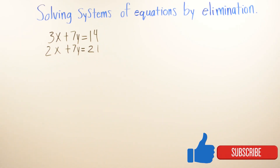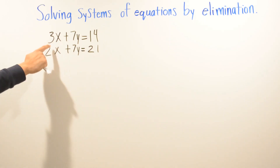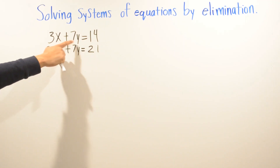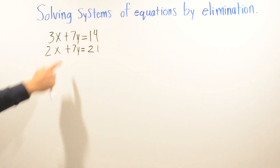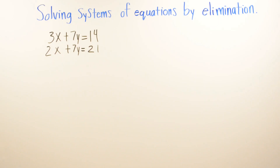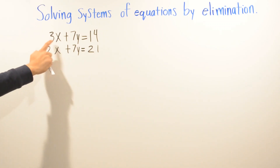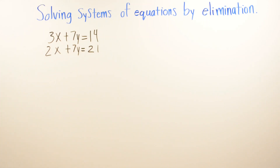In this video we're going to be talking about solving systems of equations by elimination. We have two equations: 3x plus 7y equals 14, and 2x plus 7y equals 21. On both equations we don't have any variable with a coefficient of 1 — no y by itself or x by itself — so we're going to have to add or subtract to eliminate one variable.